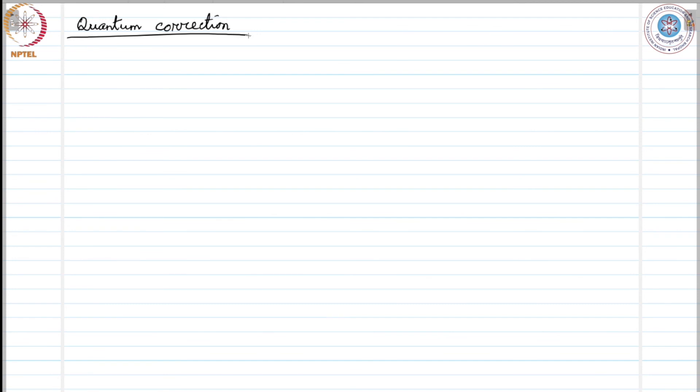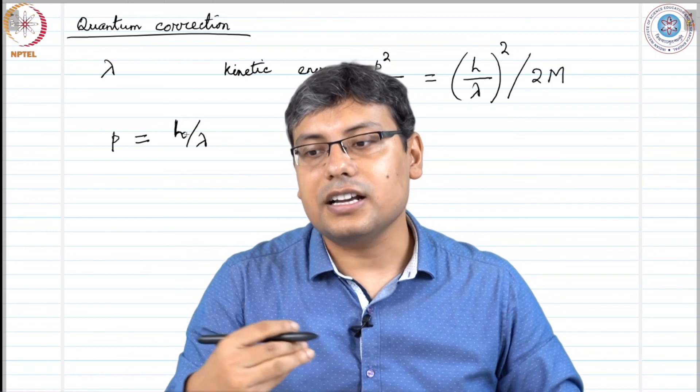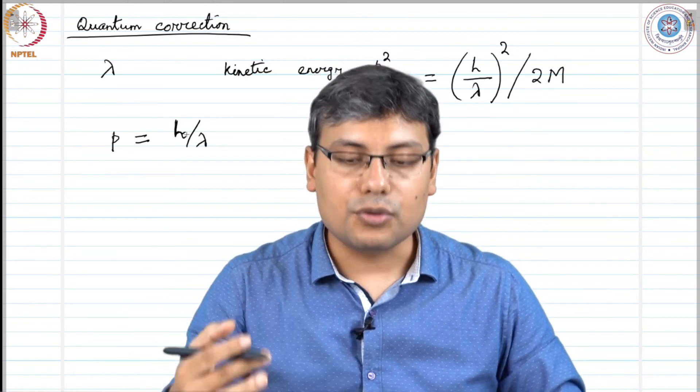If we consider an atom confined by fixed boundaries and if the particle has the quantum wavelength lambda, which is the de Broglie wavelength, then the particle will have a kinetic energy p squared over 2M, which is given as h over lambda squared over 2M. According to the de Broglie hypothesis, p equals h over lambda. From this model, the quantum zero point correction to the energy is inversely proportional to the mass. If we have heavier mass there would be less correction, and if we have lighter mass we will have more quantum correction in the system.